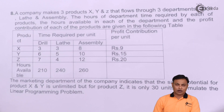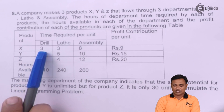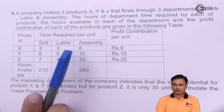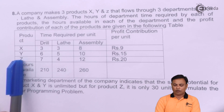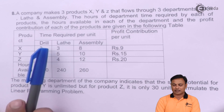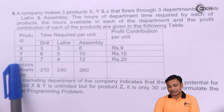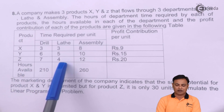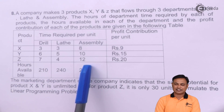We have got three products. Product X requires three hours of drilling, three hours of lath and eight hours of assembly. Product Y requires six hours of drilling, five hours of lath and ten hours of assembly. And product Z requires seven hours of drilling, four hours of lath and twelve hours of assembly.